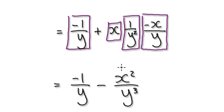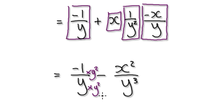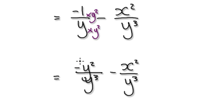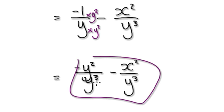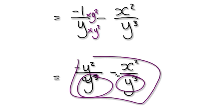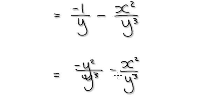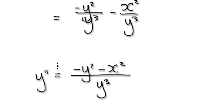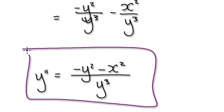Now, times top and bottom by y squared, just so that we can merge the two fractions together. That will give you this. And then now that the two denominators are the same, we can merge. So y double prime equals this thing here.